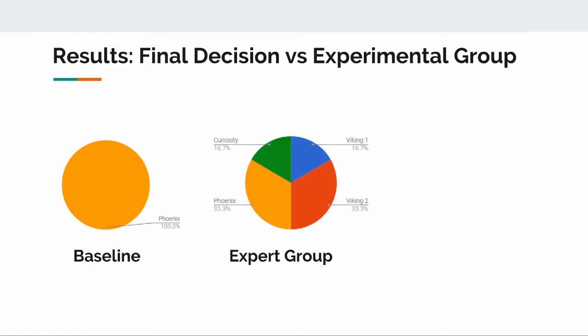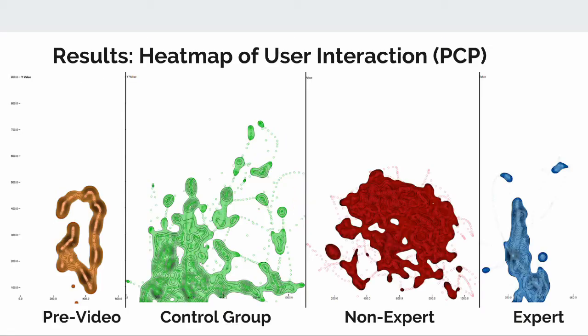We found that the expert group didn't necessarily follow the same decision as the pre-play video. They spent a lot of time analyzing the maps to make their decision. They followed the interaction history of the pre-play video quite closely, but they had their own decisions in the end. Here is a heat map of the parallel coordinate plot user interaction history,